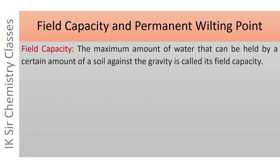First, field capacity: the maximum amount of water that can be held by a certain amount of soil against gravity is called its field capacity. In other words, the maximum water-holding capacity of a soil against gravity is called its field capacity.